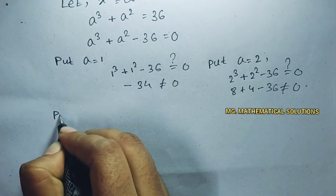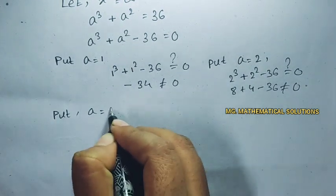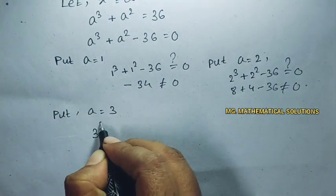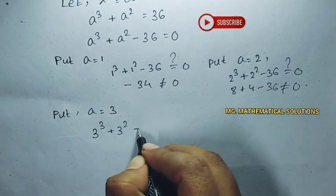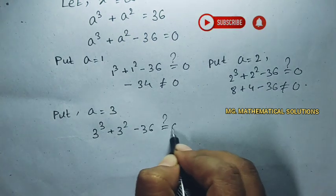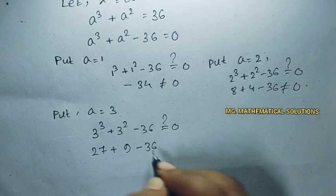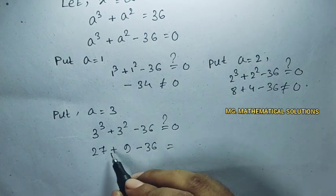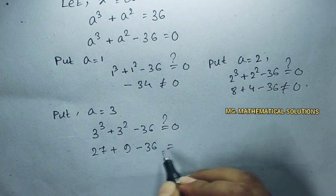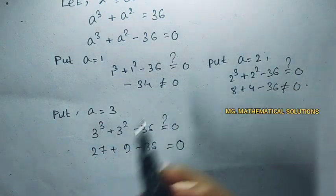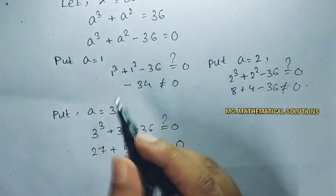Now we put a equal to 3, 3 cube plus 3 square minus 36 equals 0. So we say that the value of a equal to 3.